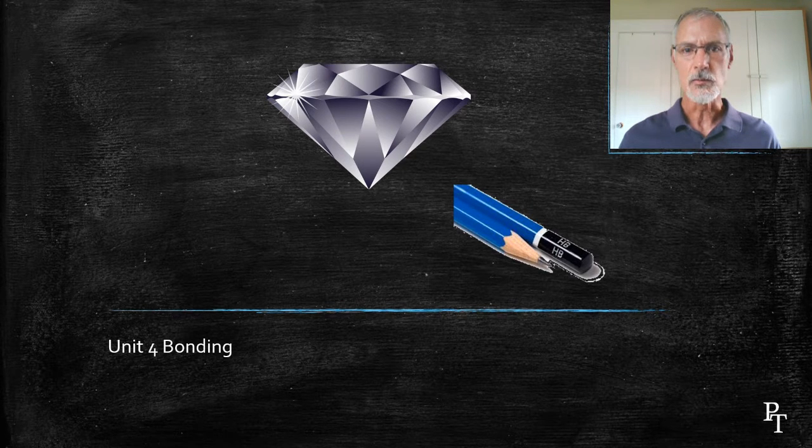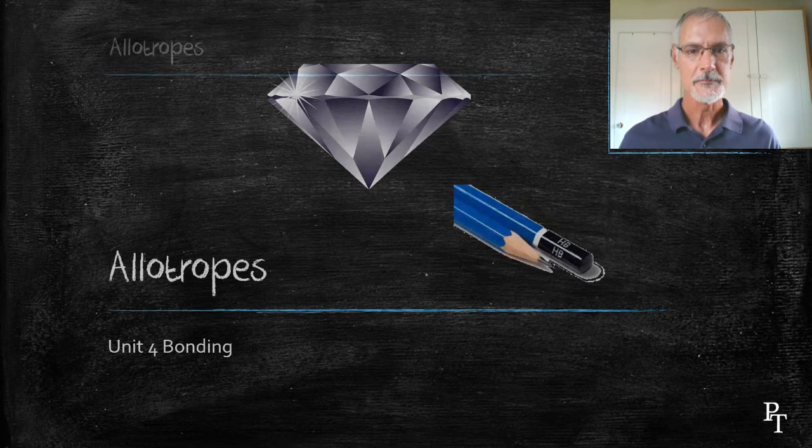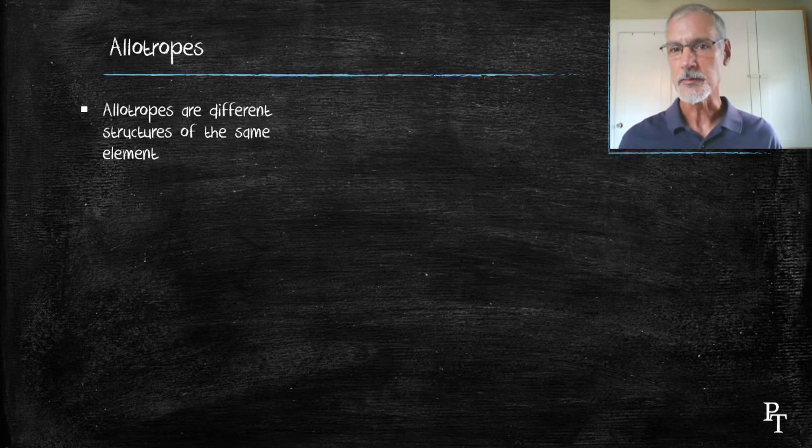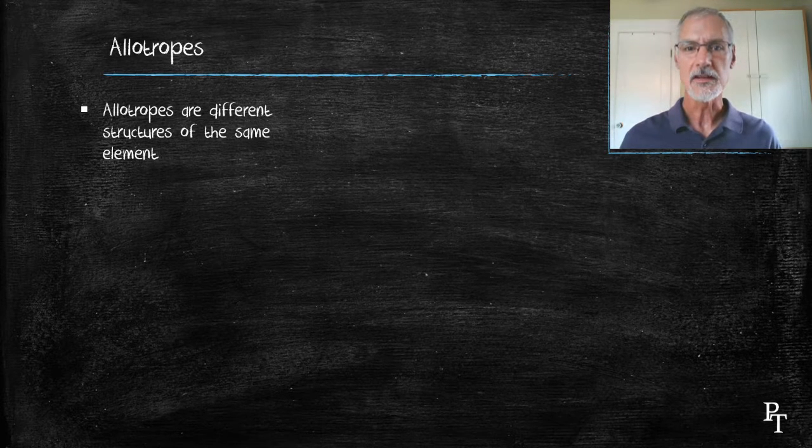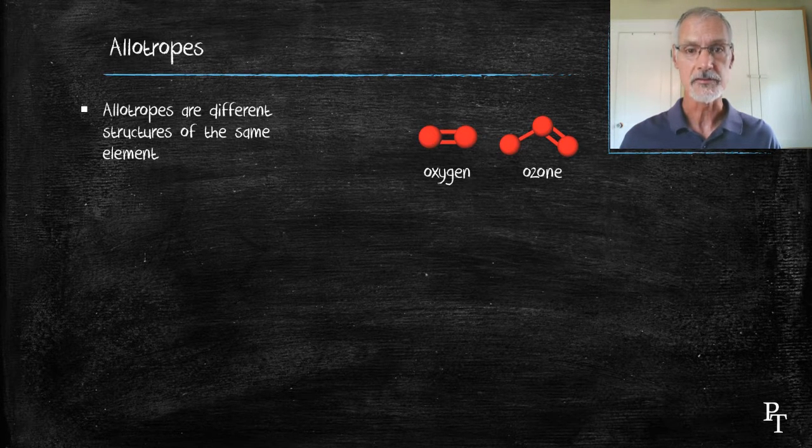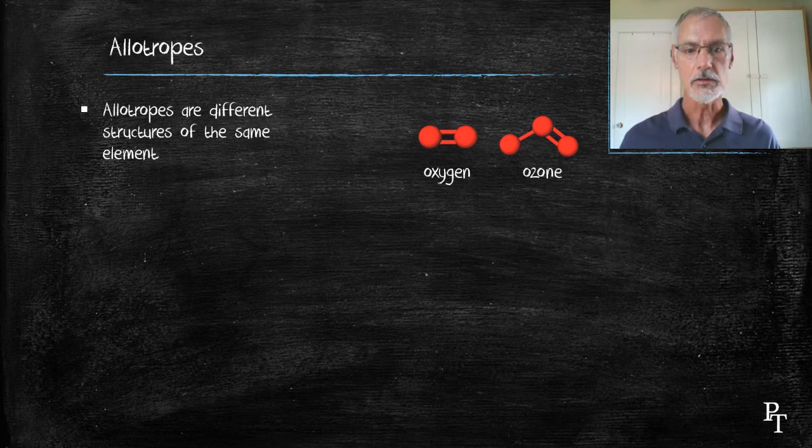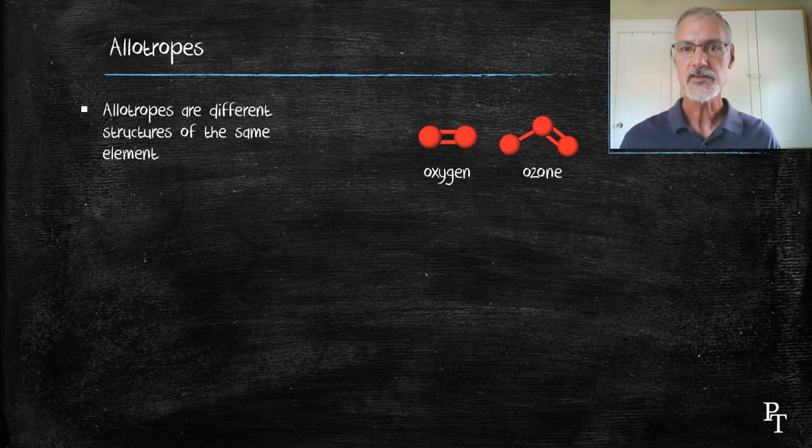This unique idea that one element can have two different structures are called allotropes. We've come across allotropes before when we looked at some covalently bonded compounds. For instance, oxygen comes in a couple of different allotropes. It can exist as O2, oxygen gas, or O3, ozone, each with its unique structure.